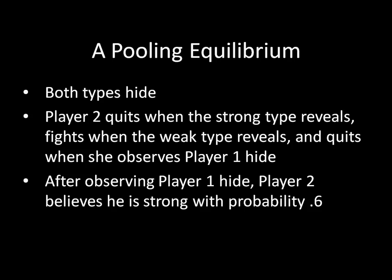In addition, Player 2 is going to fight when the weak type reveals — but again, that's off the equilibrium path. Finally, she is going to quit when she observes Player 1 hide — that is the one thing on the equilibrium path. After observing Player 1 hide, Player 2's belief is that he is strong with probability 0.6, which is equivalent to the prior belief. So that's a pooling equilibrium.